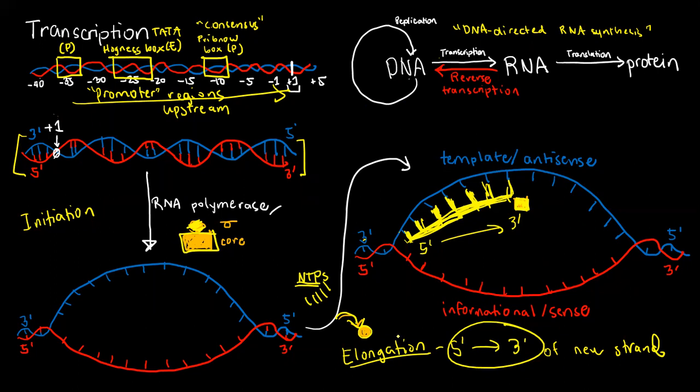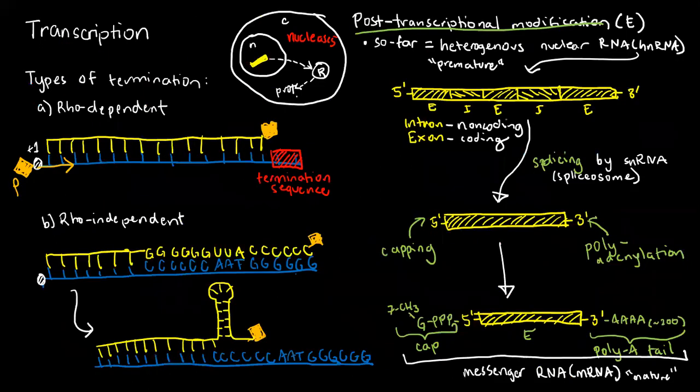Now, do know that there are two methods of terminating or stopping the process, namely the rho-dependent and the rho-independent methods. In the rho-dependent process, which is the less frequent one, we need the help of a separate protein called the rho protein. I'm just going to designate it as this one - this is the rho symbol. This one, rho-dependent termination, requires a so-called termination sequence in our template strand.